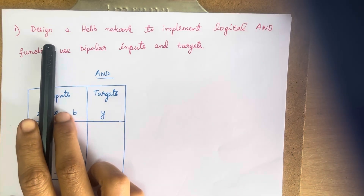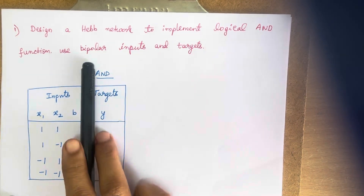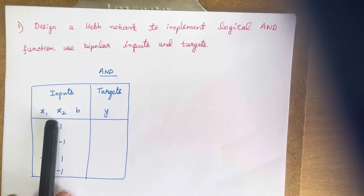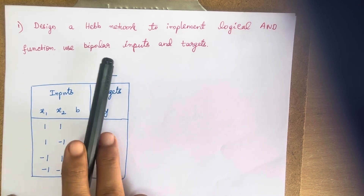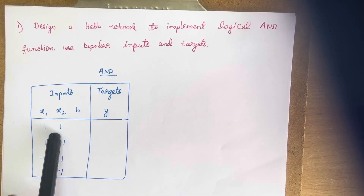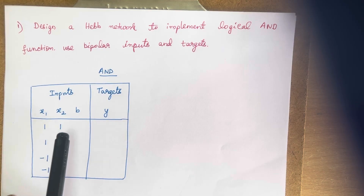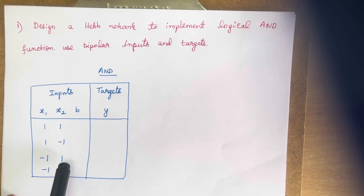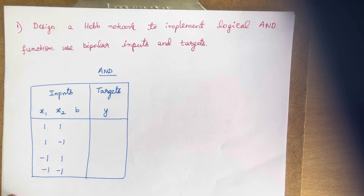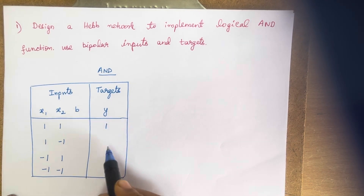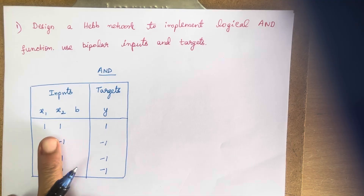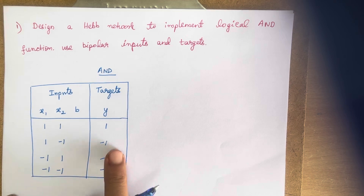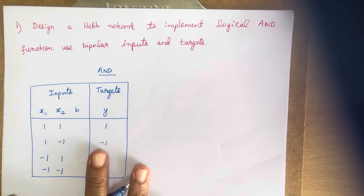The problem given to us is to design a HEP network to implement the logical AND function using bipolar inputs and targets. Since we have bipolar inputs, X1 and X2 will take values of 1 or minus 1 instead of 0. The input combinations are: (1,1), (1,-1), (-1,1), and (-1,-1). The target output is 1 when both inputs are 1, and minus 1 for all other cases. This is your logical AND function.